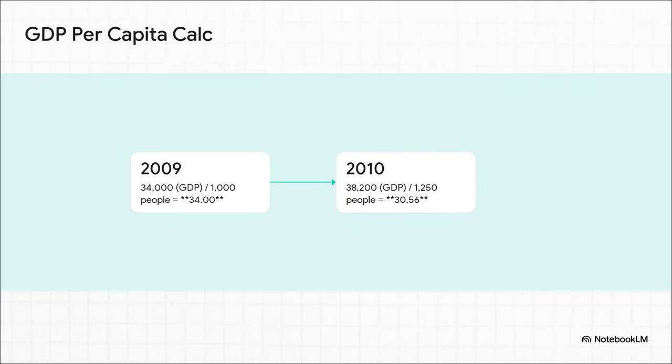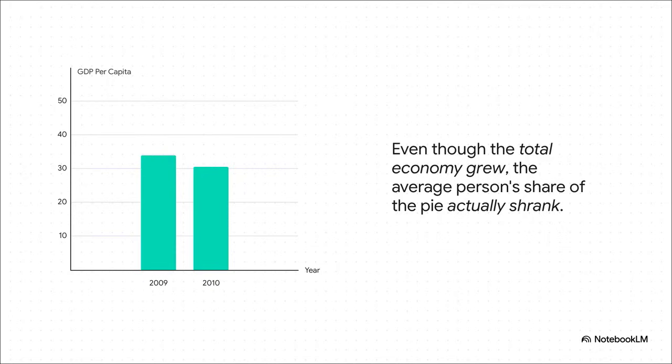Let's do the math. In 2009, we had a GDP of 34,000 for 1,000 people. That's a GDP per capita of 34. Simple. But in 2010, our bigger GDP of 38,200 now has to be split among 1,250 people, and that gives us 30.56. Wait, what? Look at that. The GDP per person is lower. Even though the whole economy grew, the average person's share of that economy actually went down.